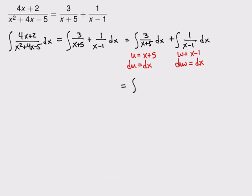So that means that when I actually rewrite these, I get the integral of 3 over u du plus the integral of 1 over w dw. And I can integrate those each pretty easily. So this is 3 times the natural log of the absolute value of u plus 1 times the natural log of the absolute value of w plus an unknown constant.